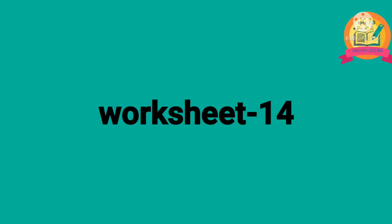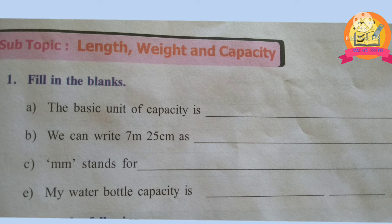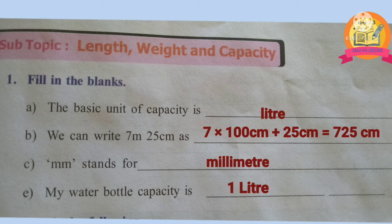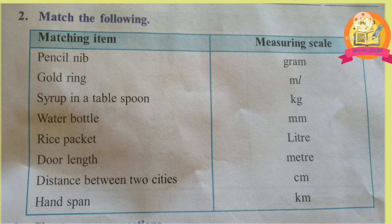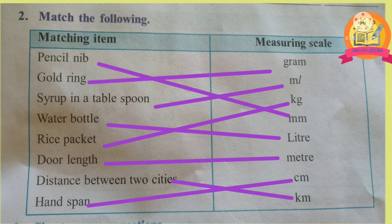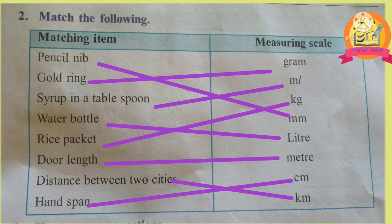Worksheet 14. First problem: fill in the blanks. The basic unit of capacity is liter. We can write 7 meters 25 centimeters as 725 centimeters. MM stands for millimeter. My water bottle capacity is 1 liter. Second problem: match the following with the correct measuring scale. Pencil nib — millimeters; gold ring — gram; water bottle — litre; rice packet — kg; door length — meter; distance between 2 cities — kilometers; hand span — centimeters.